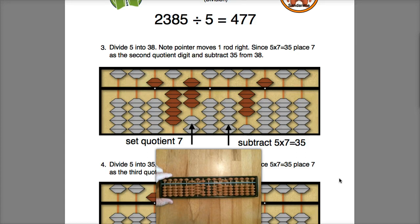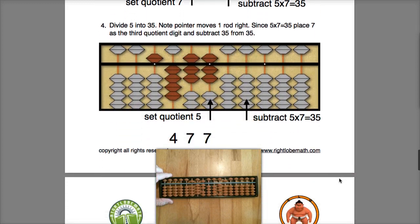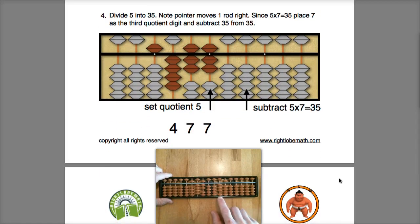And then finally I'll take 5 into the final remaining 35 and place another 7 in my quotient, clear the 35 remaining, and I have a final answer of 477.